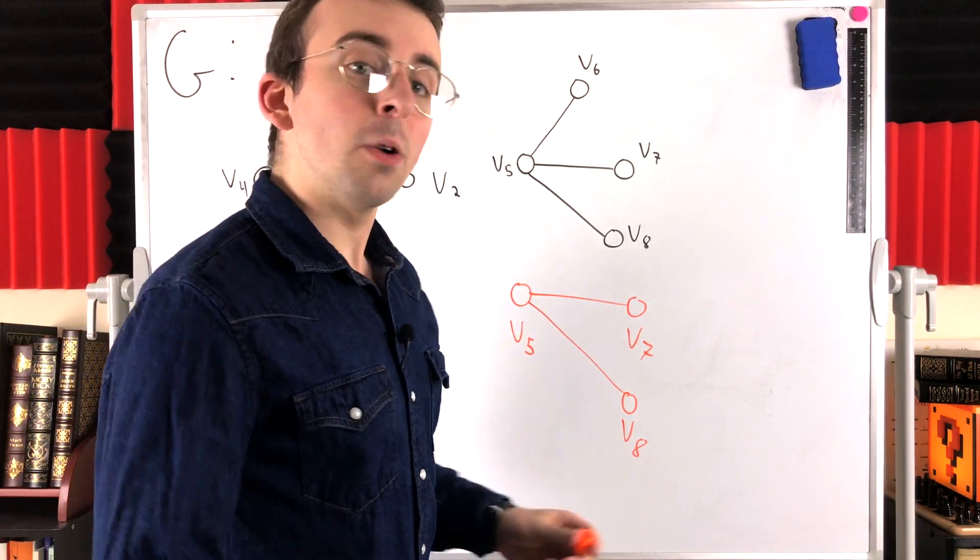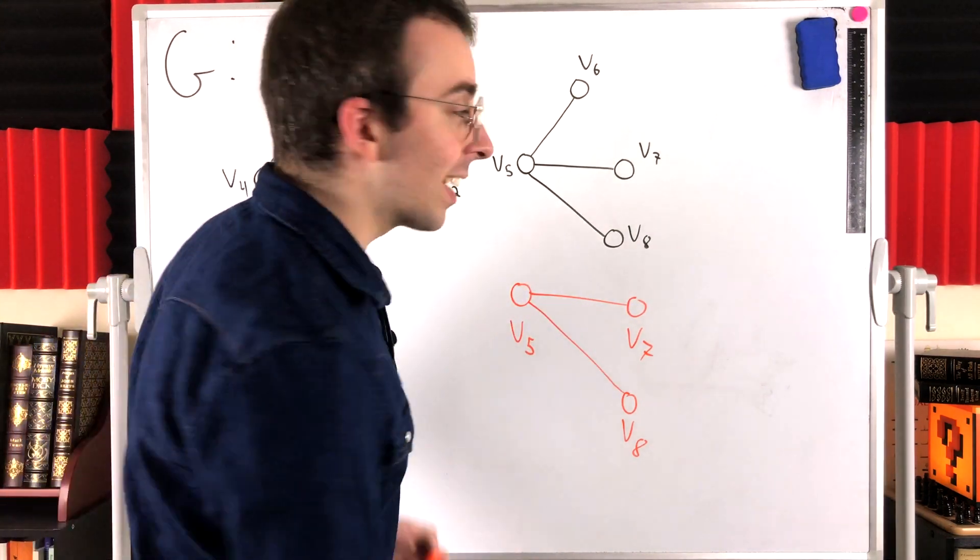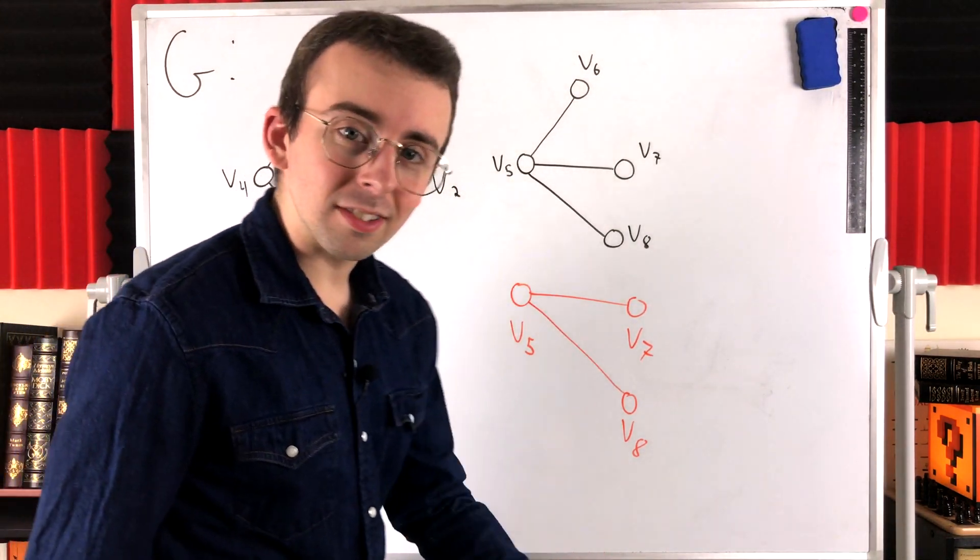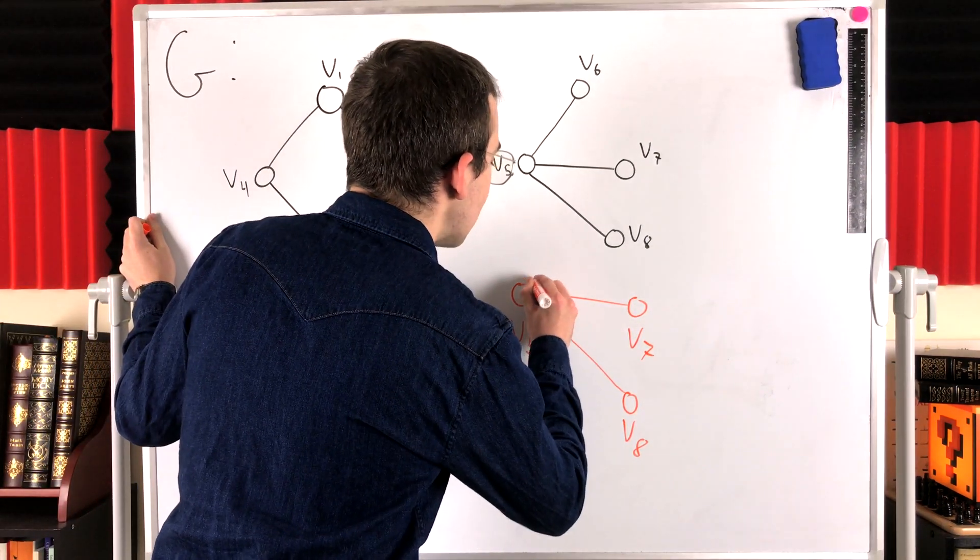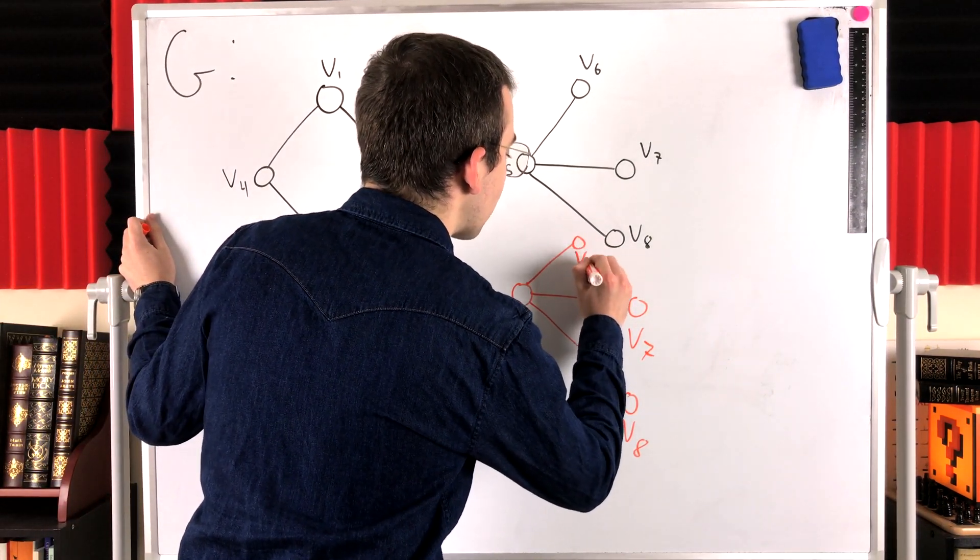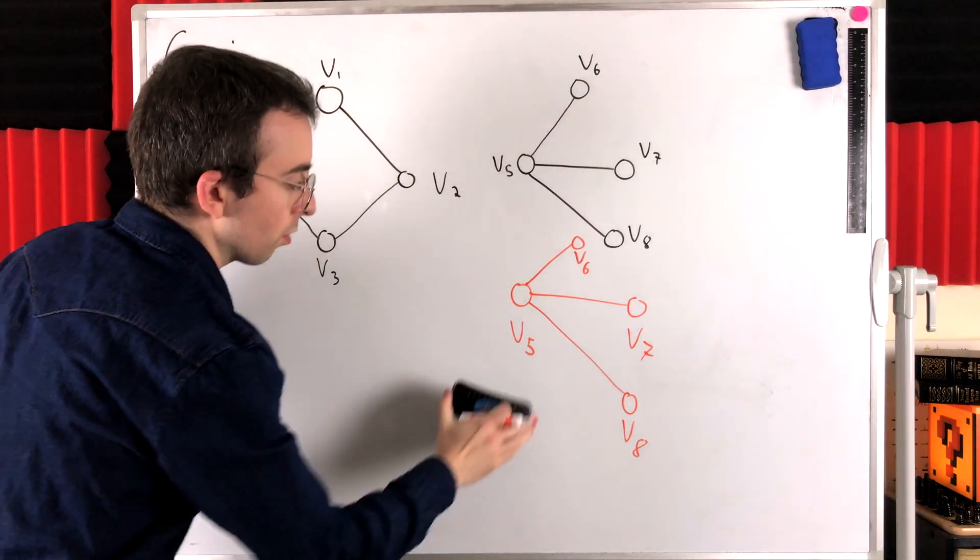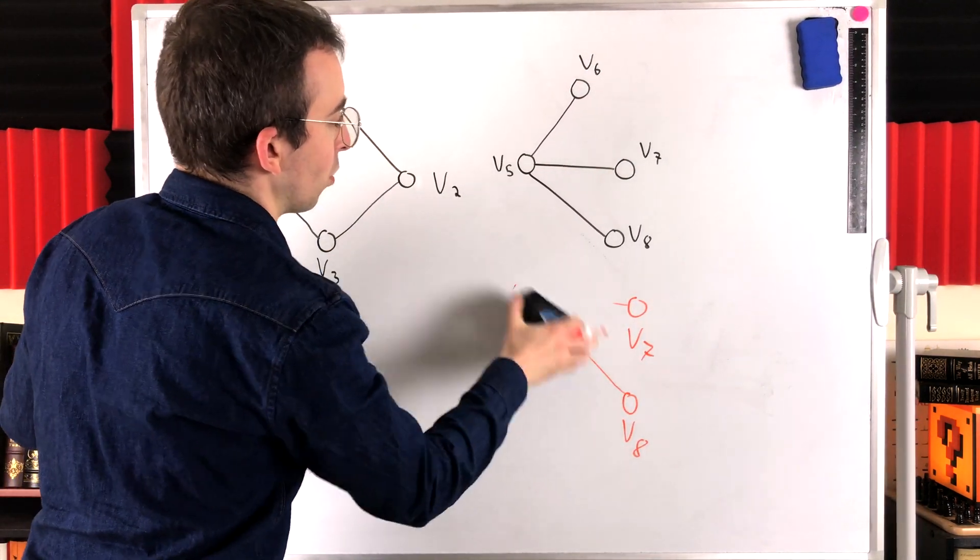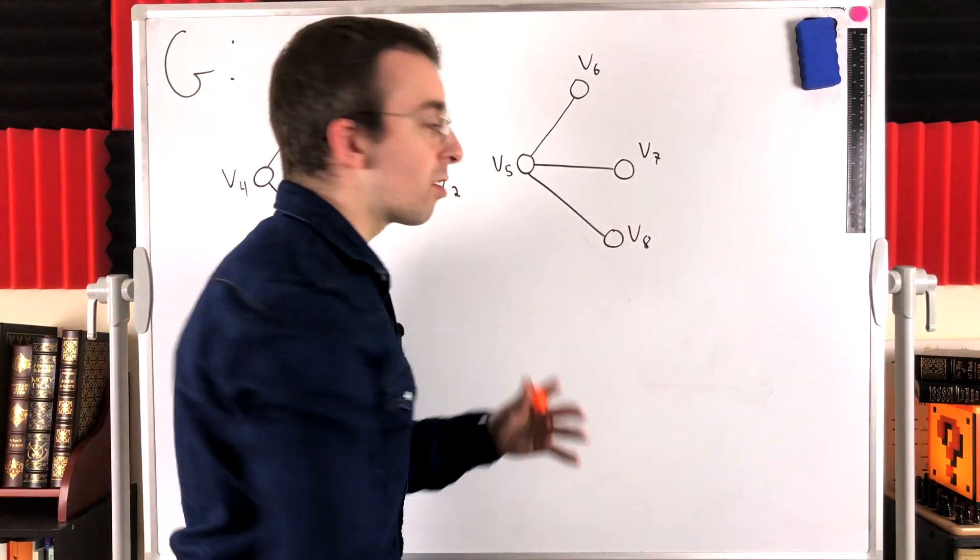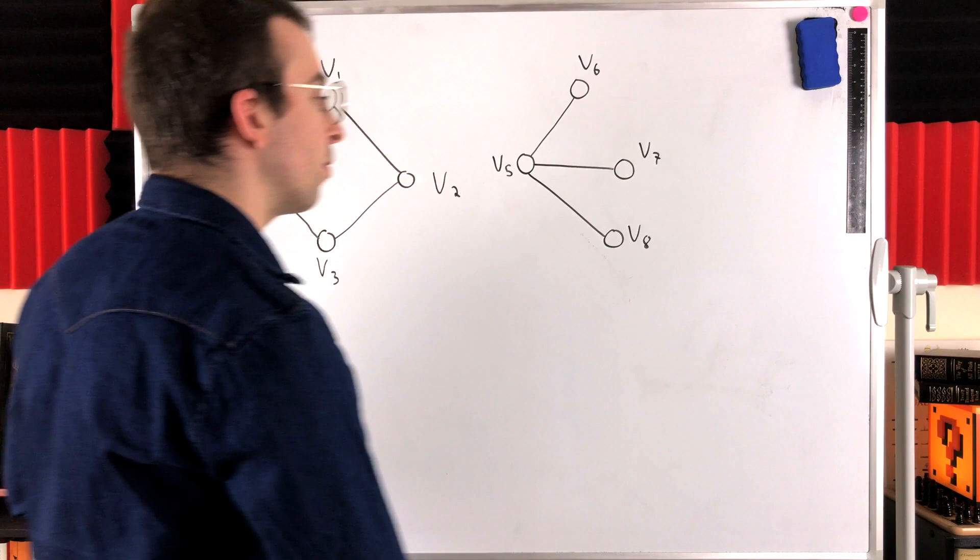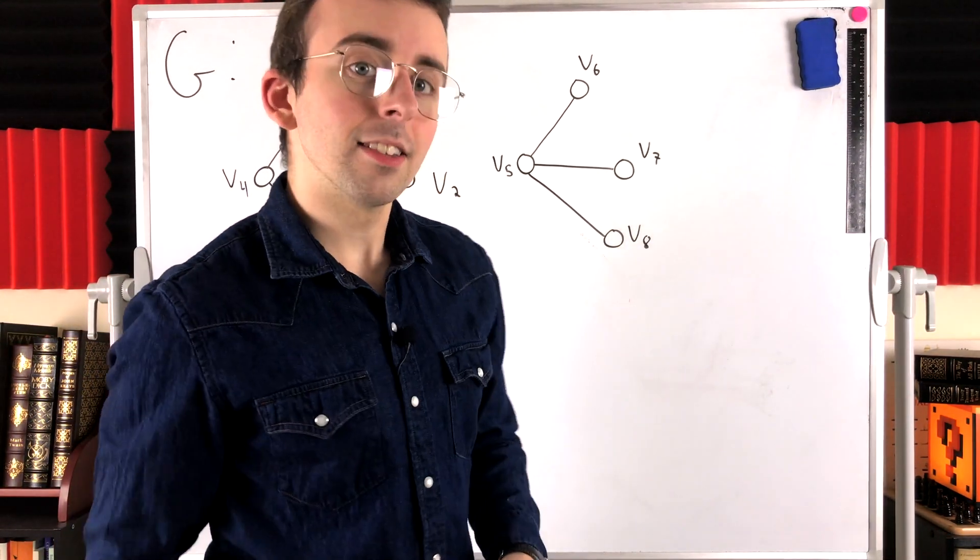Is this a component? No, still not a component, because we could extend it while preserving its connectedness. It is a proper subgraph of another connected subgraph of G. We could extend it with this edge and the vertex V6. And now we are looking at this whole piece there. So I'll just erase the orange one, because we've just redrawn this. And that is a component of G, because there are no other vertices or edges of G we could include to get a bigger connected subgraph.